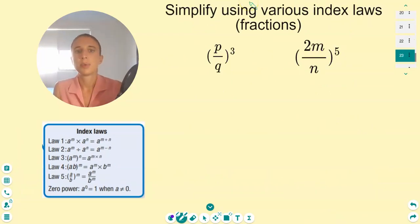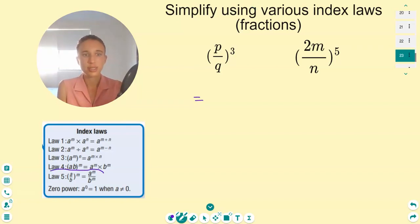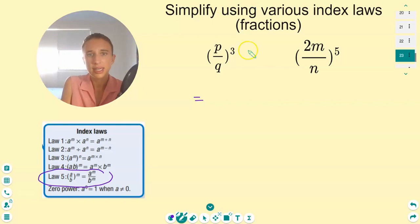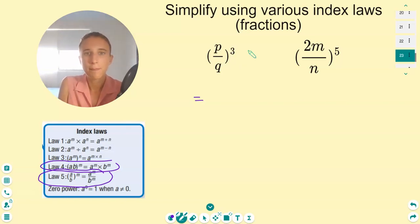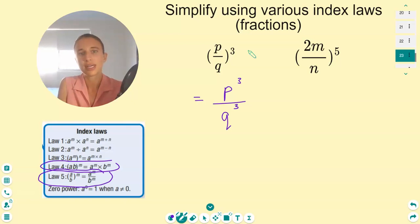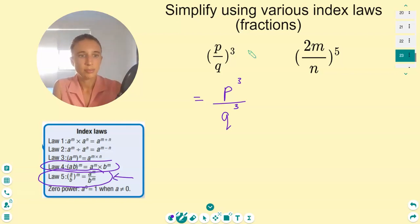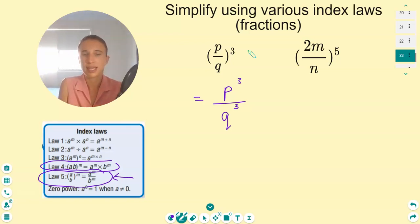Now this is introducing law five. P on Q to the three — it's quite similar to law four. Any term in a fraction raised to a power means each part gets raised to that power. So we raise P to the power of three and Q to the power of three. Law five: a on b to the m is the same as a to the m on b to the m. Raise each number inside the brackets to the power outside.